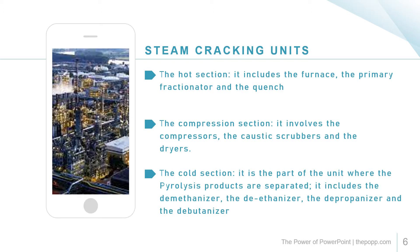The compression section involves the compressor, the caustic scrubber, and the dryers. The cold section is the part of the unit where the pyrolysis products are separated. It includes the de-methanizer, the de-ethanizer, the de-propanizer, and the de-butanizer.